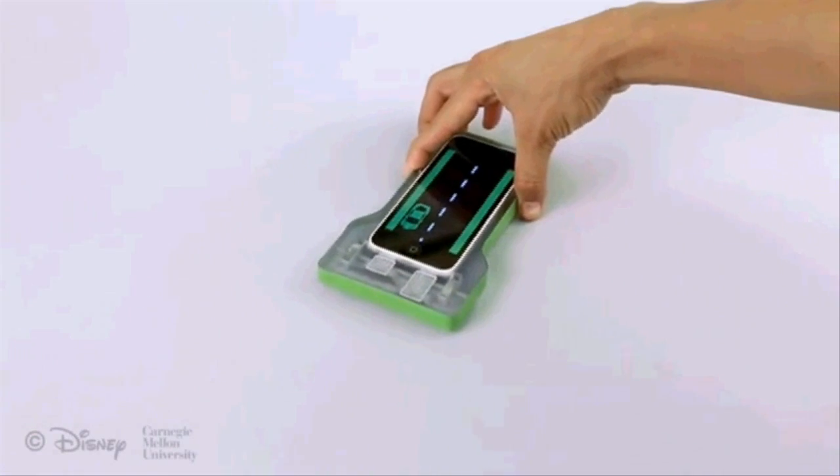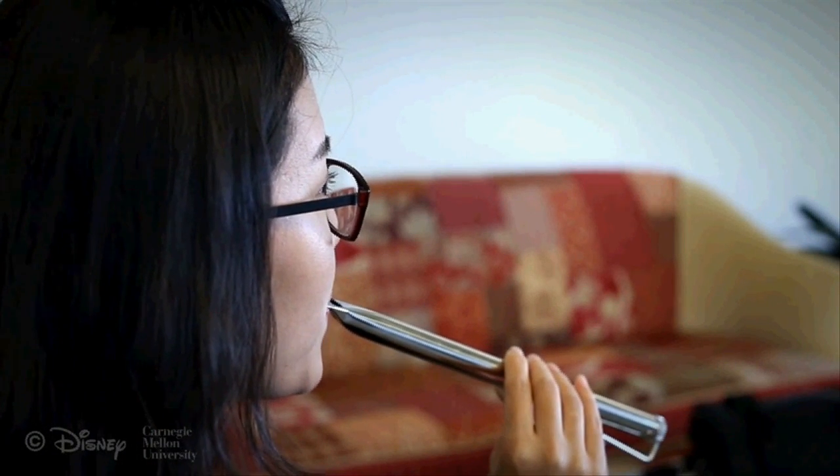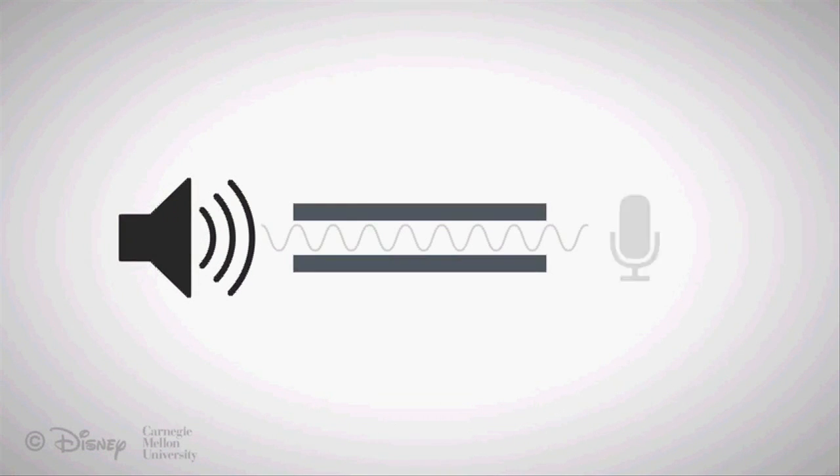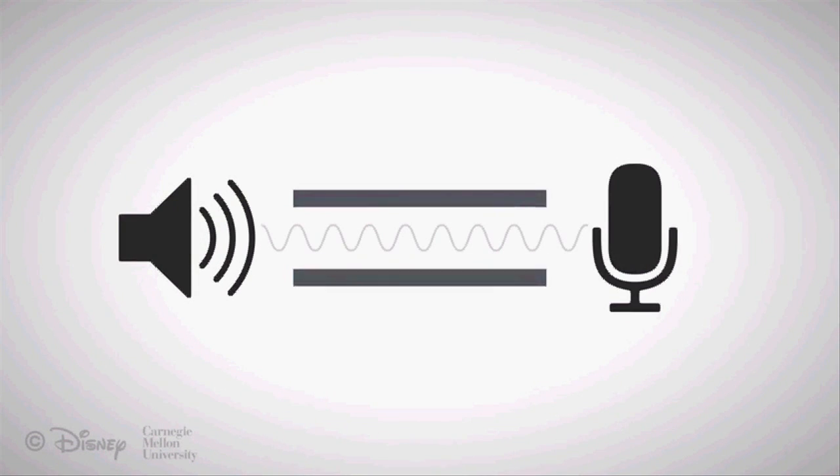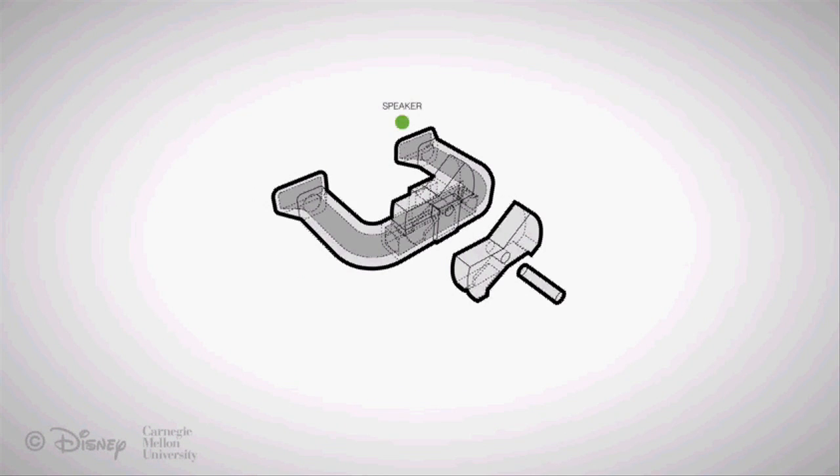The researchers got the inspiration for their invention from wind instruments. The idea is to use pluggable plastic tubes and other structures to connect the smartphone's speaker with its microphone. The device can then be controlled by acoustically altering sounds as they pass through this system.